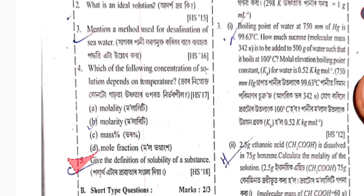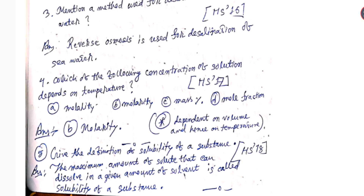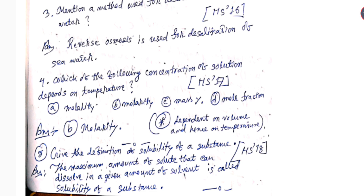Question number 5: Give the definition of solubility of a substance. The maximum amount of solute that can dissolve in a given amount of solvent is called the solubility of a substance.